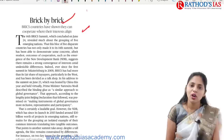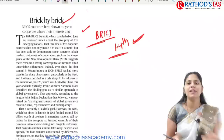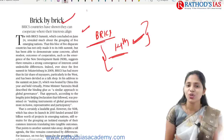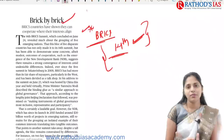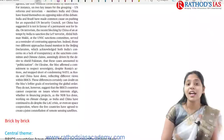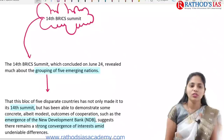The next topic is the 14th BRICS Summit, which has recently concluded. The article discusses highlights of this BRICS summit, which are important for the mains exam. In international relations, you can expect around three questions — one from neighborhood, one from organizations, and one from bilateral relations. BRICS falls under organizations, so you can expect a question from it this year.